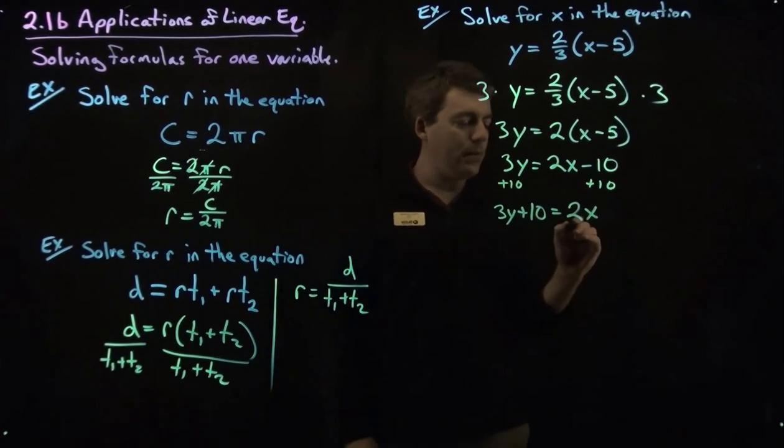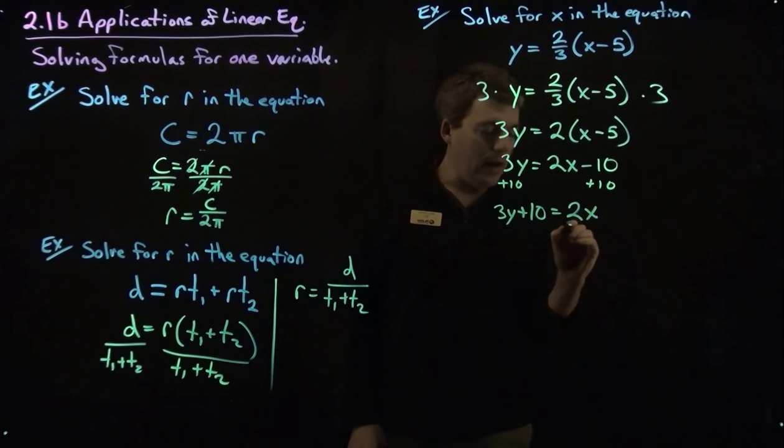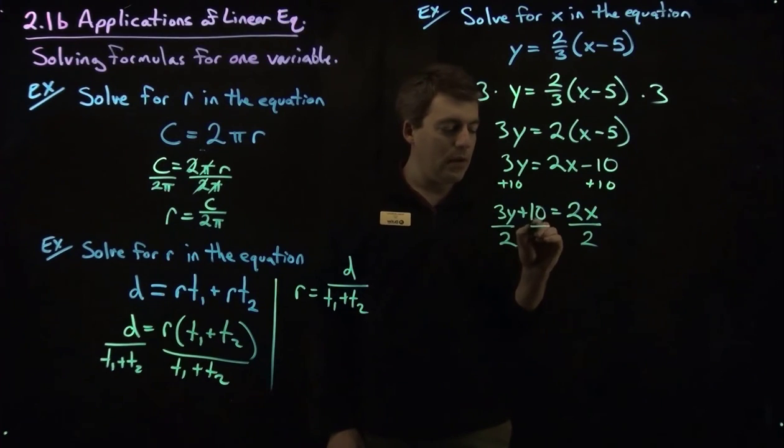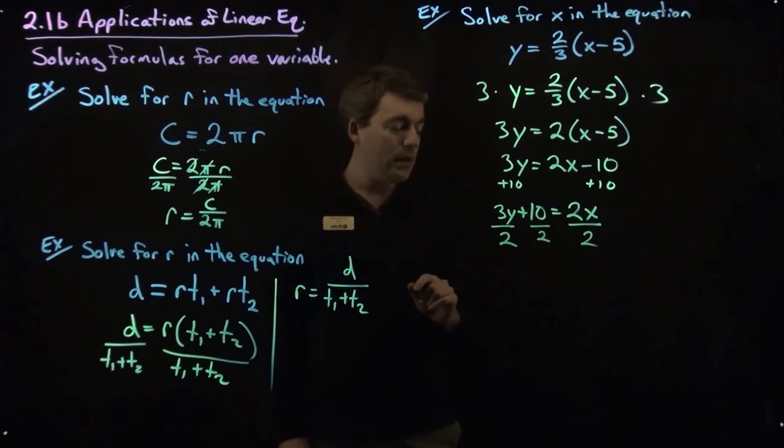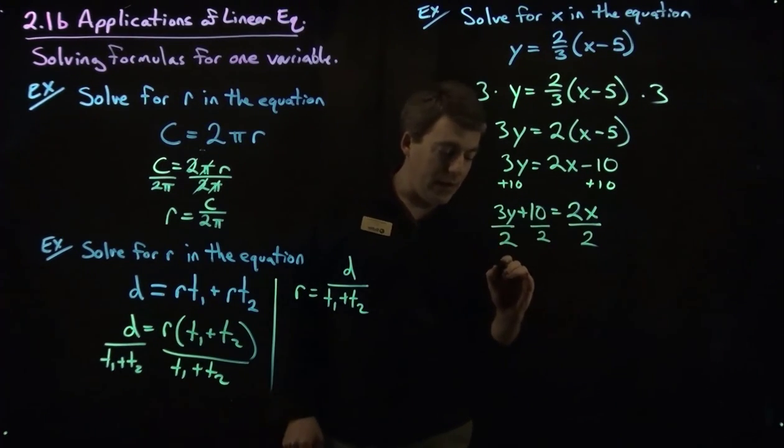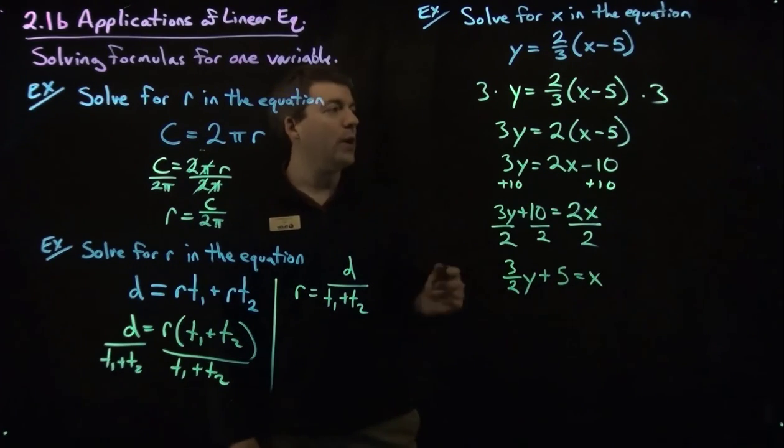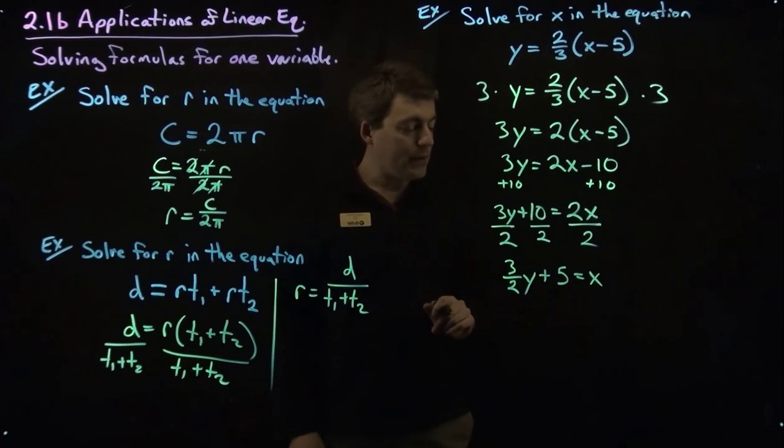Then we'll divide by 2. And we need to divide everything on both sides by 2. So the 10 also divided by 2. So that gives us 3 halves y plus 10 divided by 2 is 5 equals x. There we go. Solved this equation for x.